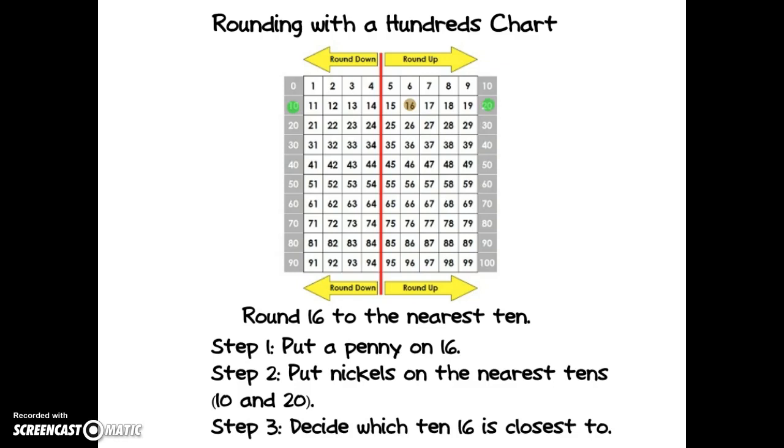Finally I decide which ten sixteen is closest to. If I count, sixteen is seventeen, eighteen, nineteen, twenty. Four spaces away from twenty. And eleven, twelve, thirteen, fourteen, fifteen, sixteen. A lot more spaces to get to ten. So I round sixteen to twenty.